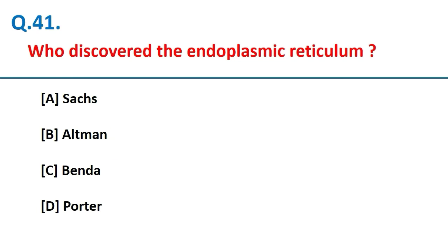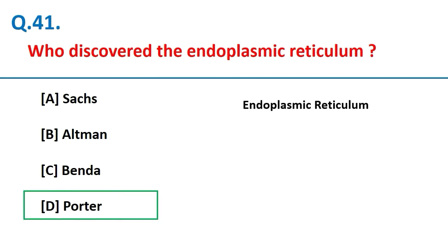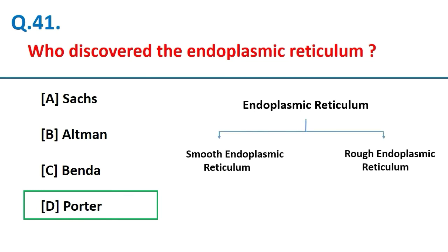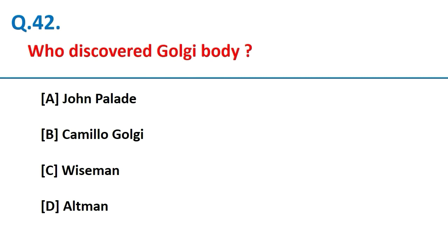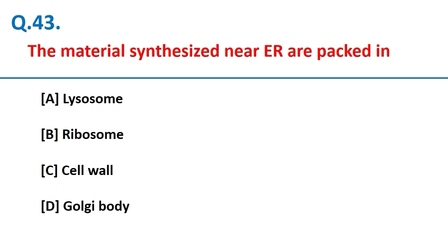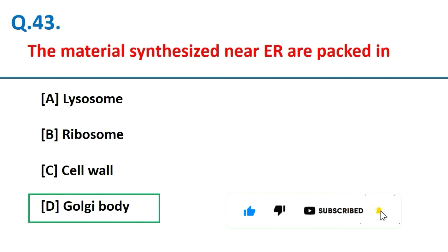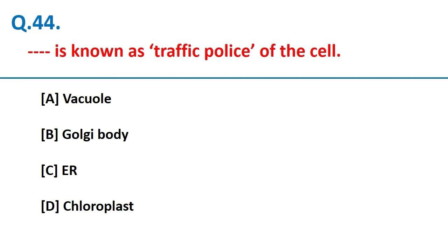The endoplasmic reticulum was discovered by Camillo Golgi. It is divided into two parts: smooth endoplasmic reticulum and rough endoplasmic reticulum. The material synthesized by the endoplasmic reticulum is packed in the Golgi body, which is known as the traffic police of the cell.